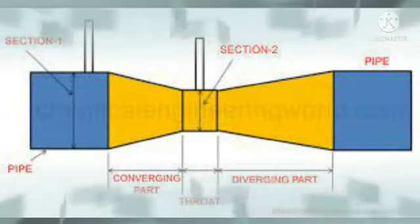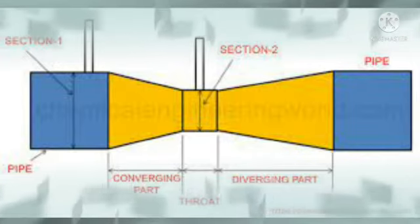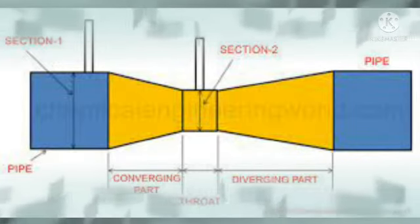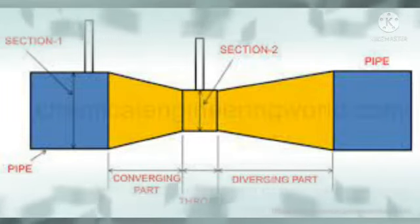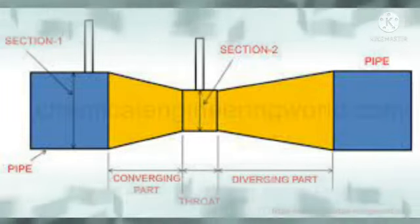Venturimeter is used to find the discharge of fluid flowing through a pipe. It consists of a short converging part and a long diverging part which is being connected by a throat.